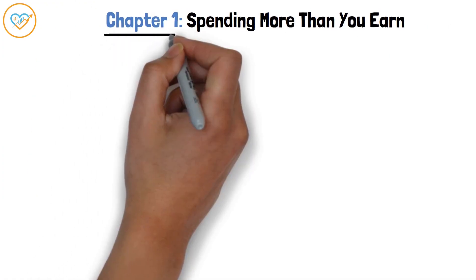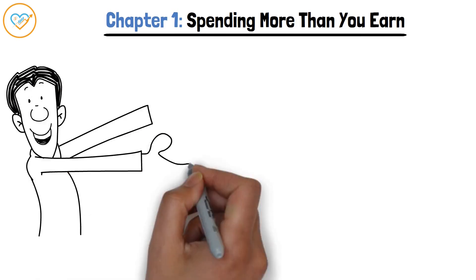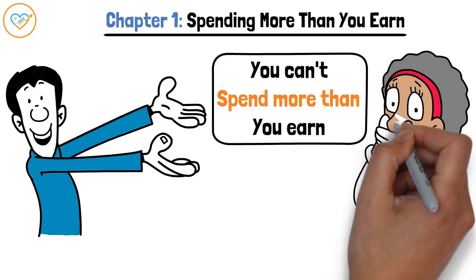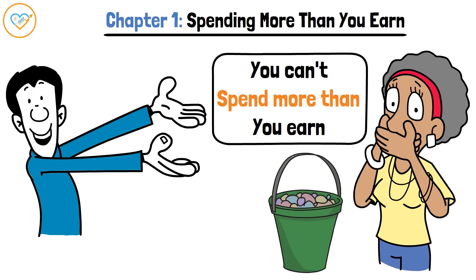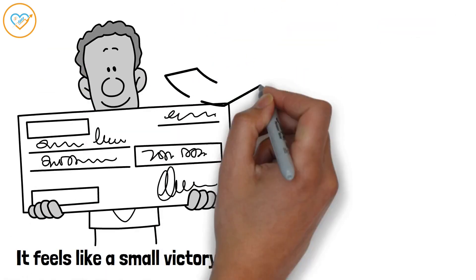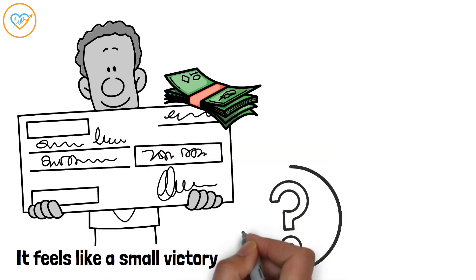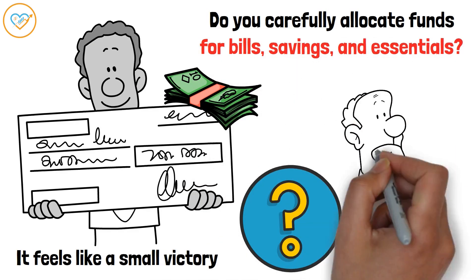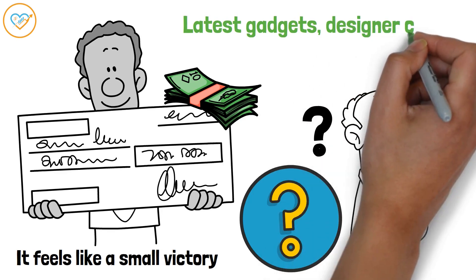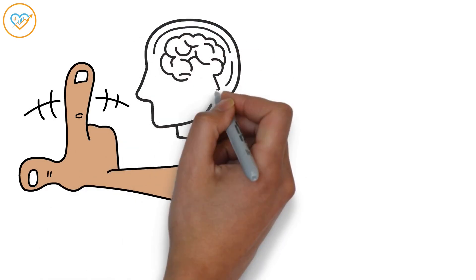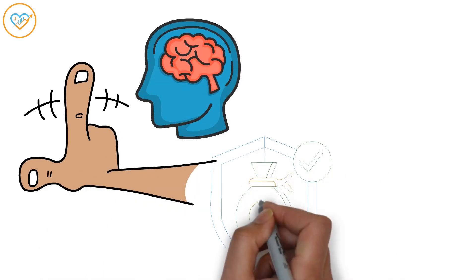Chapter 1: Spending More Than You Earn. Let's start with a fundamental financial principle. You can't spend more than you earn. It sounds simple, but it's a mistake countless people make. Overspending is like trying to fill a bucket with a hole in it. No matter how much you pour in, it's always going to leak out. Imagine this. You get a paycheck, and it feels like a small victory. You've earned that money, right? But what happens next? Do you carefully allocate funds for bills, savings, and essentials? Or do you find yourself tempted by the latest gadgets, designer clothes, or dining out?